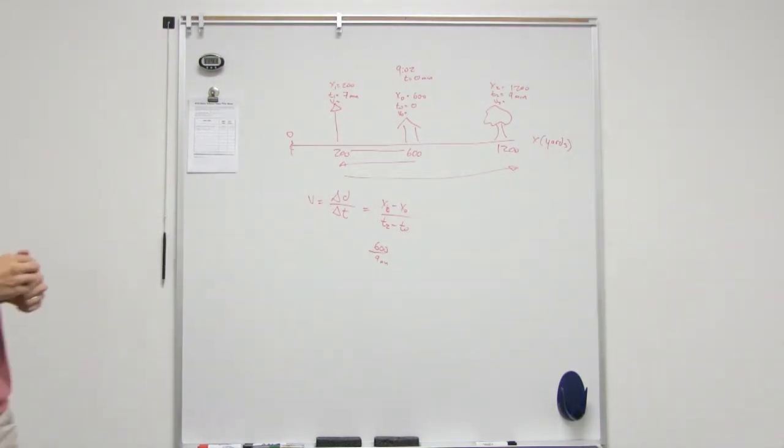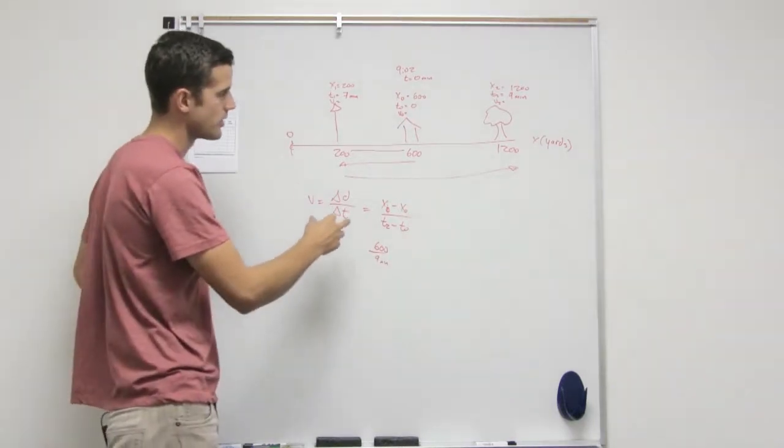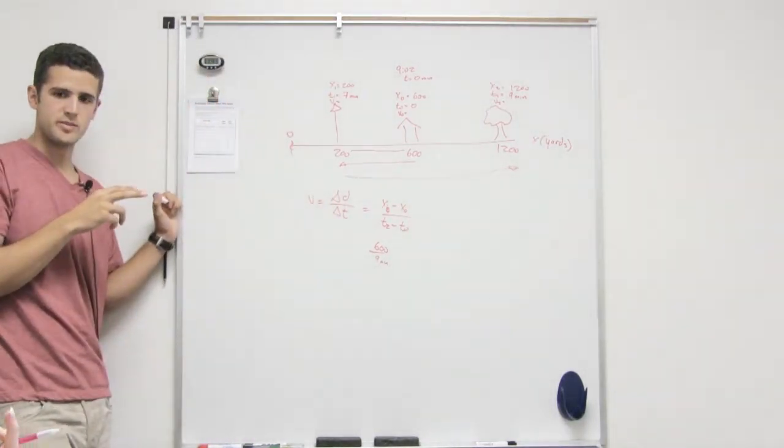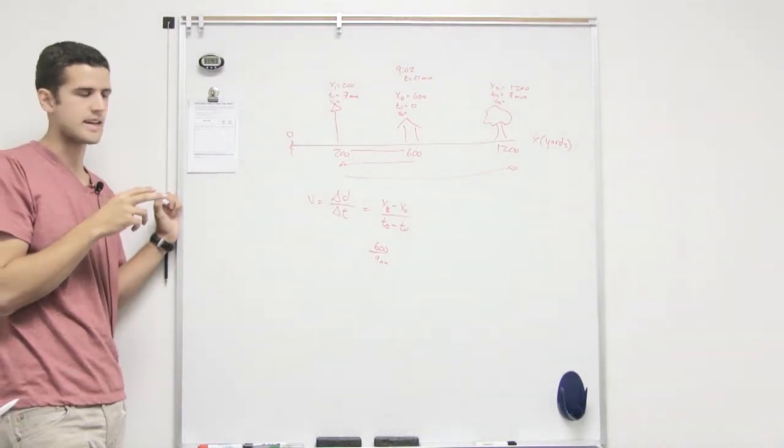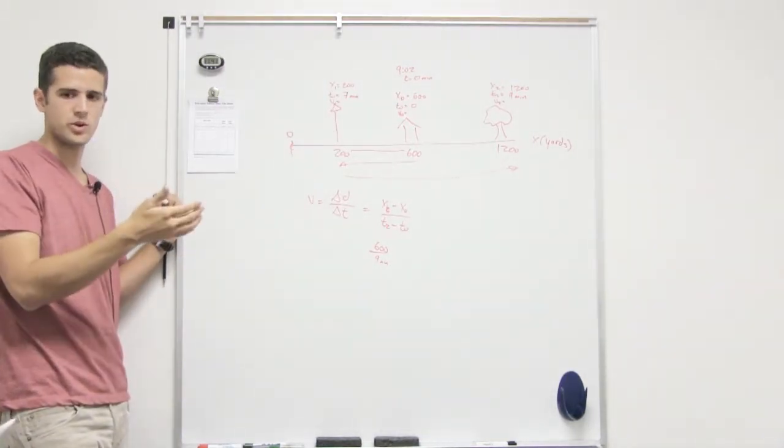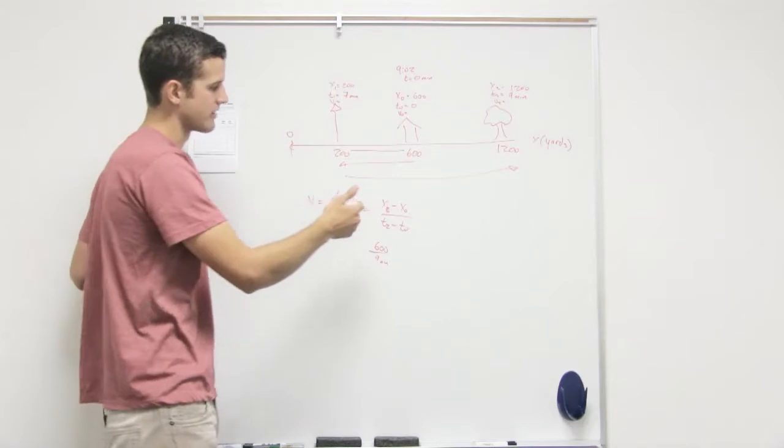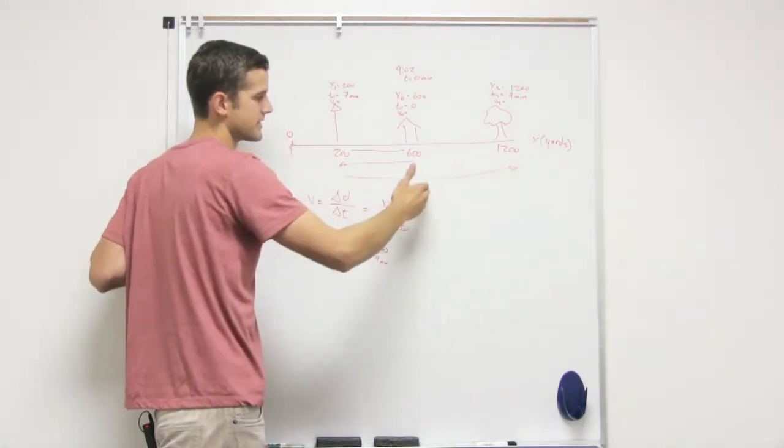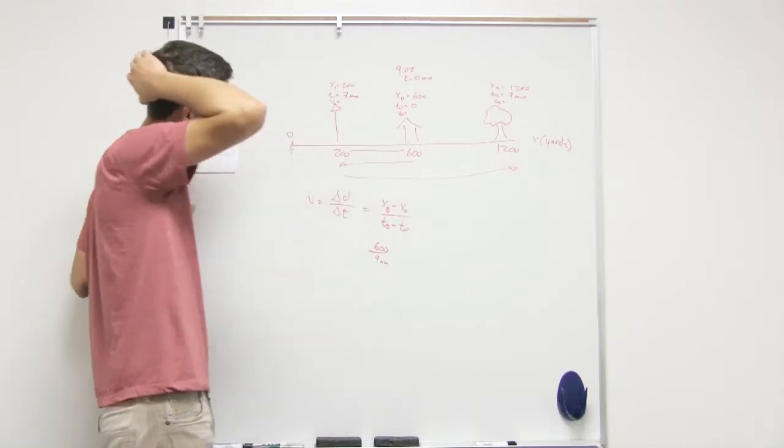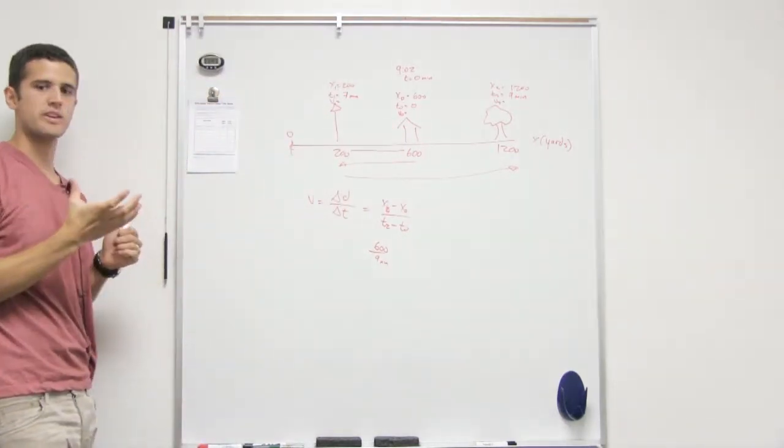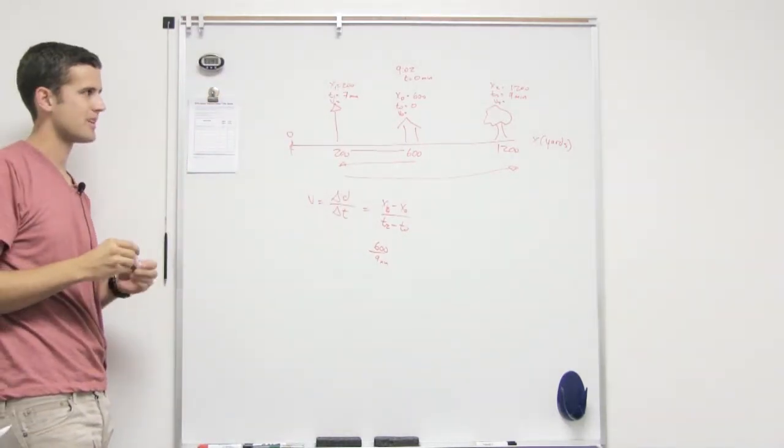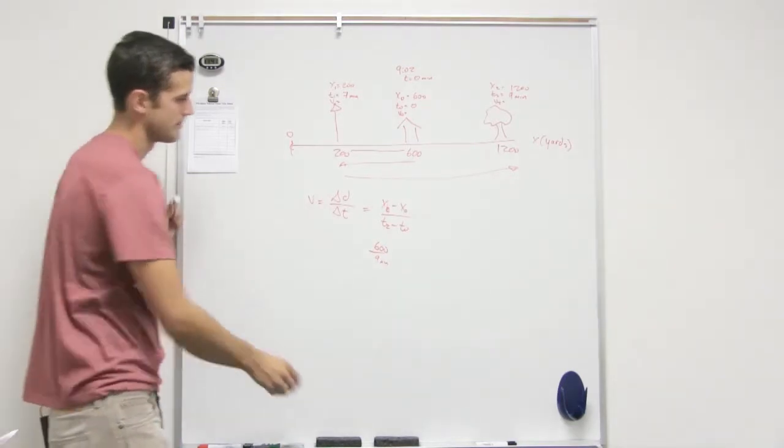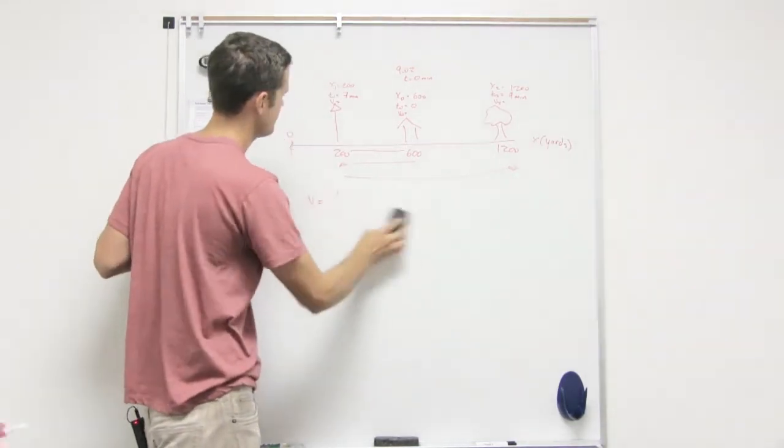Because even though he ran backwards for a while, his average velocity, if you ignored the fact that he ran backwards, he would cover the same distance in nine minutes if he ran at 66.7. Yeah, okay, I think it's weird. Yeah, so that's what it's looking for. So the difference would be that the first one we did would be average speed, okay, because that just is his total distance over his total time. This is average velocity, meaning his final position minus his initial position. You just have to ignore that he went backwards for a while that time.